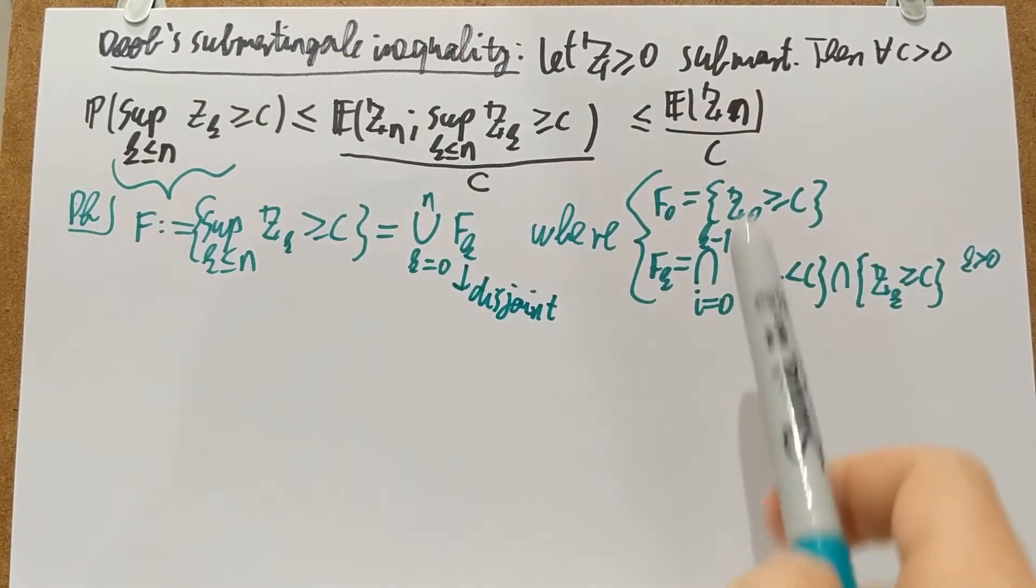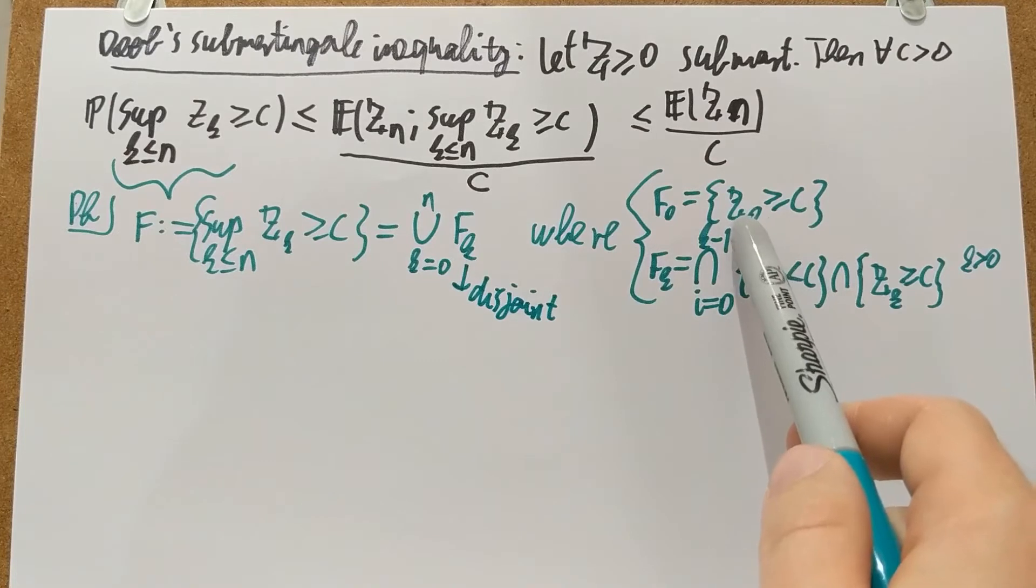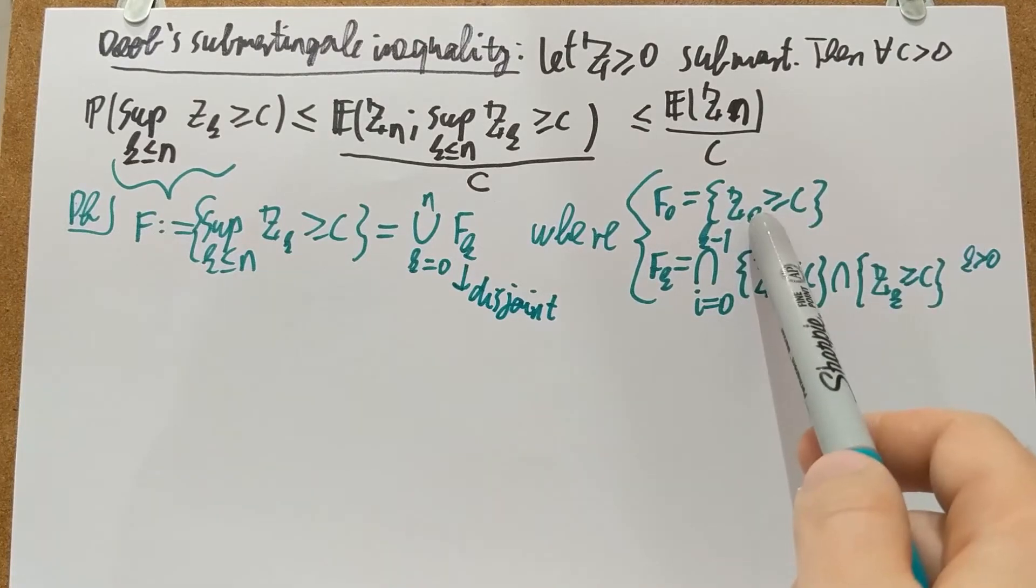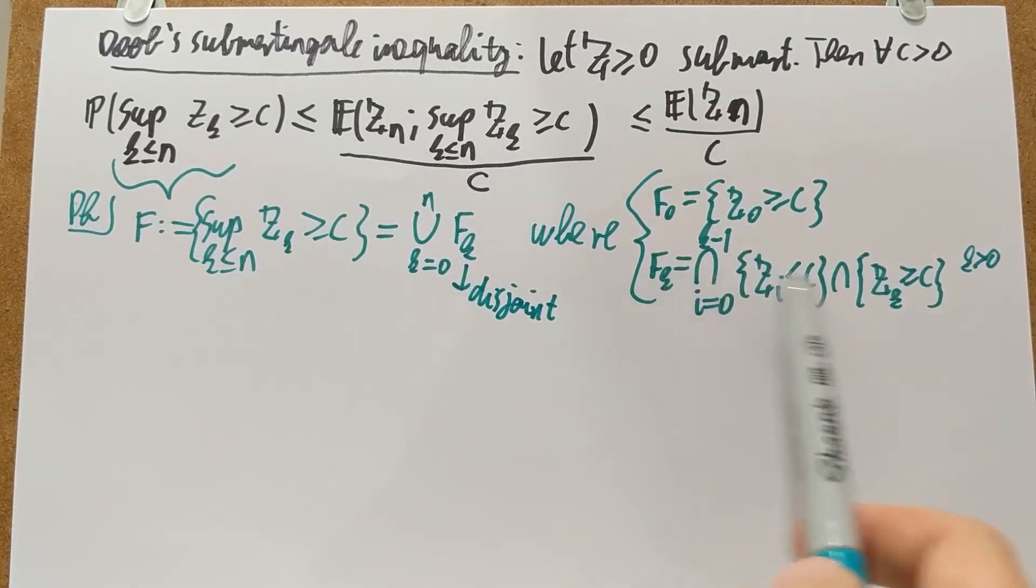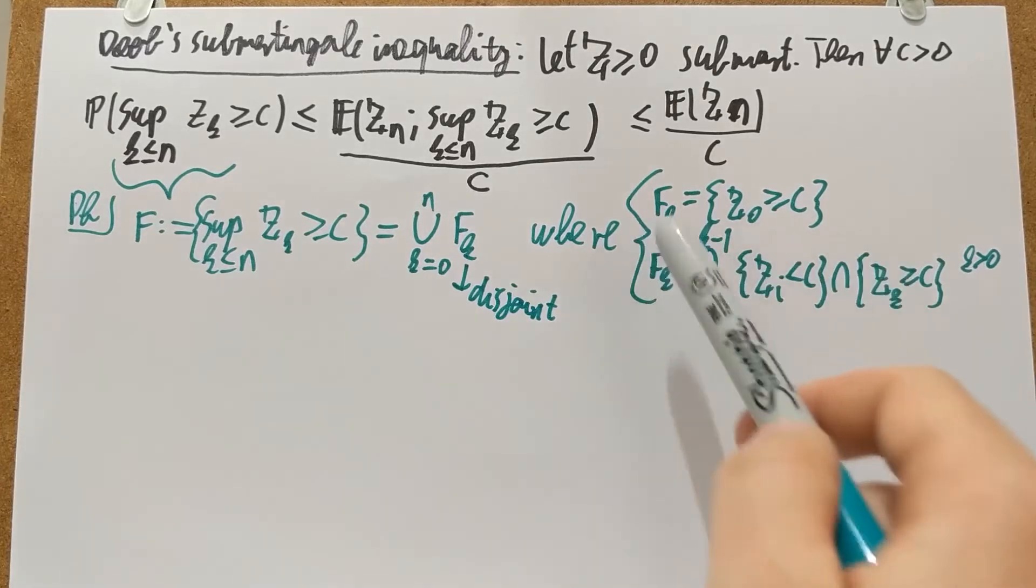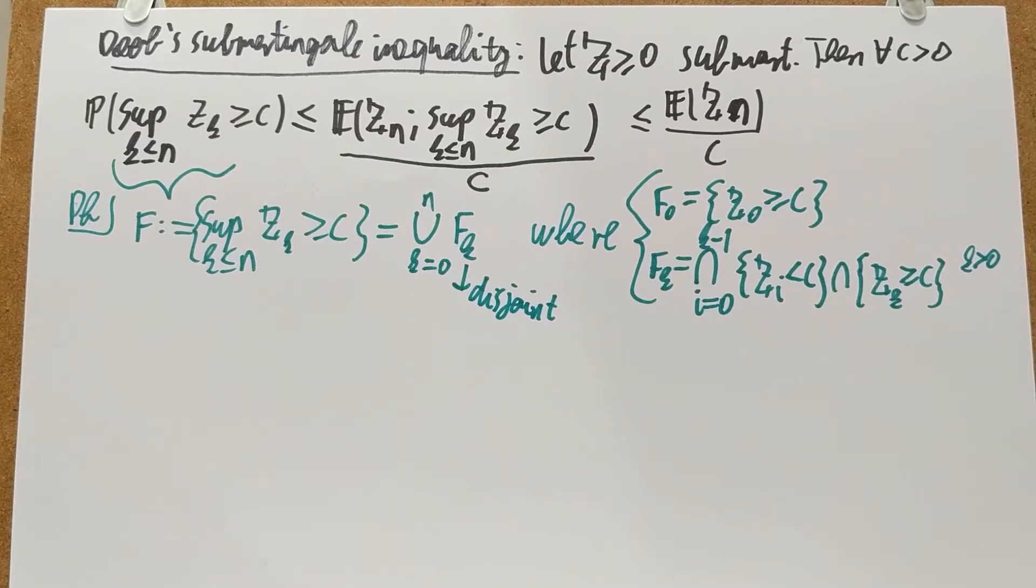It cannot happen that you reach level C at F_0, at the 0-th index, and also at the 5th index. Or you first reach level C at the 5th instance and also the 7th instance. That cannot happen, right? So these guys are exclusive. F_0 and all the F_K's together are disjoint or exclusive events.